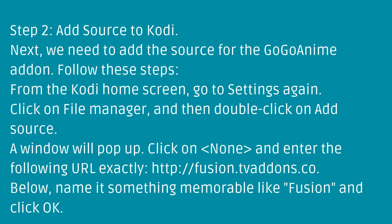Step 2: Add Source to Kodi. Next, we need to add the source for the GoGoAnime Add-on. From the Kodi home screen, go to Settings again, click on File Manager, and then double-click on Add Source. A window will pop up — click on it and enter the following URL exactly. Name it something memorable like Fusion and click OK.